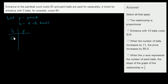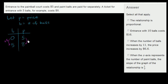Let's start at zero balls. If we have zero balls, we have to pay just to get into the paintball court, and that costs $5. Now they tell us a ticket for entrance with five balls — so entrance and five balls costs $8. So let's think about what the incremental price per ball is. We're going to assume that the price per ball is constant after you pay the first $5 admission. When our number of balls increases by five, our price increases by $3.